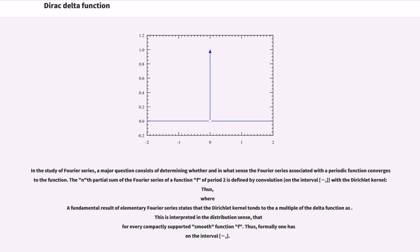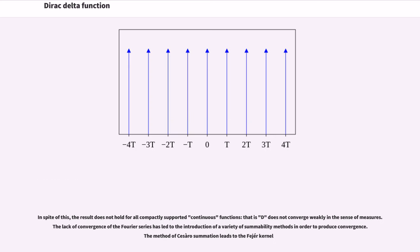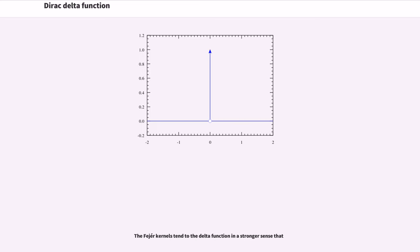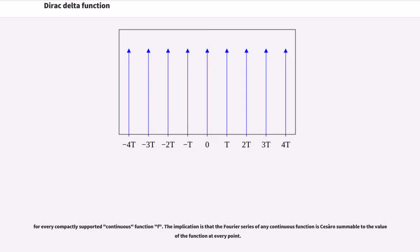Formally, one has the delta function representation on the interval, but the result does not hold for all compactly supported continuous functions — that is, the Dirichlet kernel does not converge weakly in the sense of measures. The lack of convergence of the Fourier series has led to the introduction of a variety of summability methods. The method of Cesàro summation leads to the Fejér kernel. The Fejér kernels tend to the delta function in a stronger sense, and consequently the Fourier series of any continuous function is Cesàro summable to the value of the function at every point.